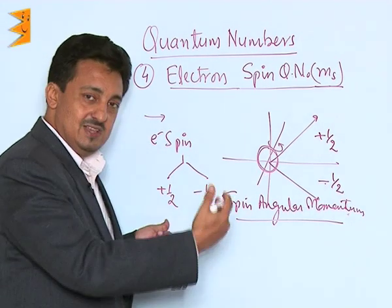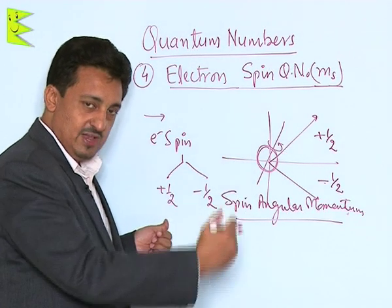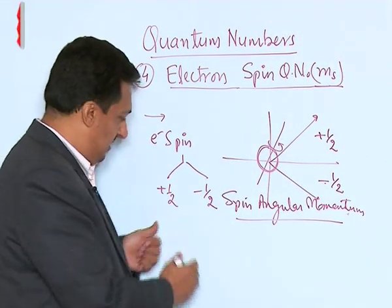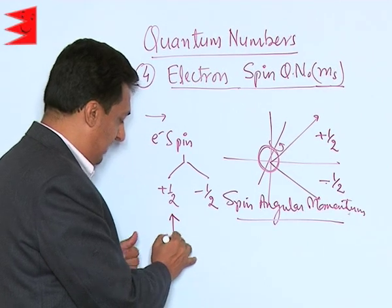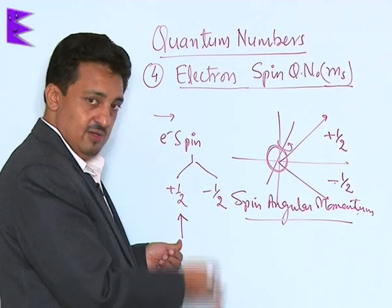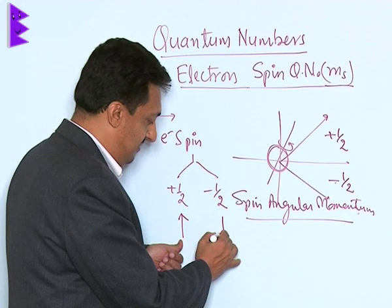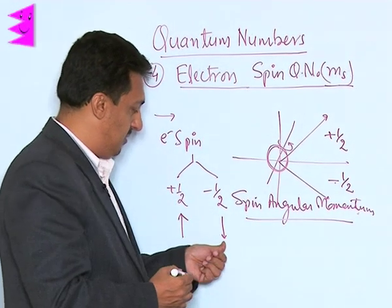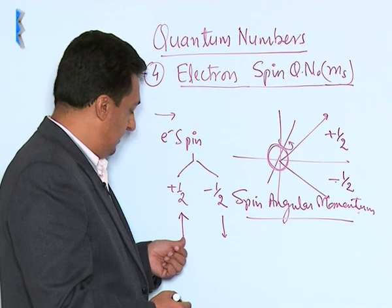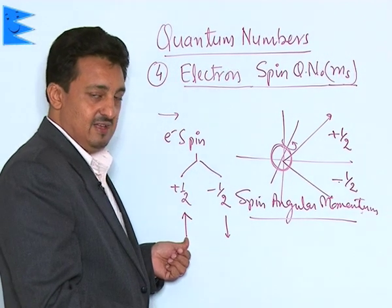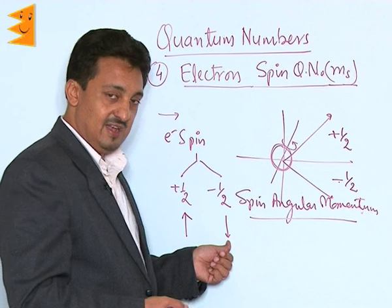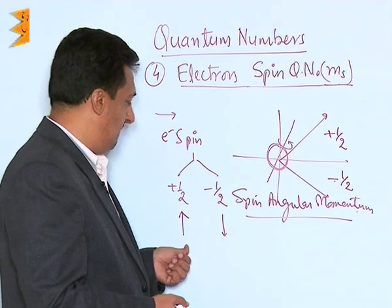These two values represent the orientations of the electron's spin. We give them symbols: up spin (+1/2) is represented by an upward arrow, and down spin (-1/2) is represented by a downward arrow.